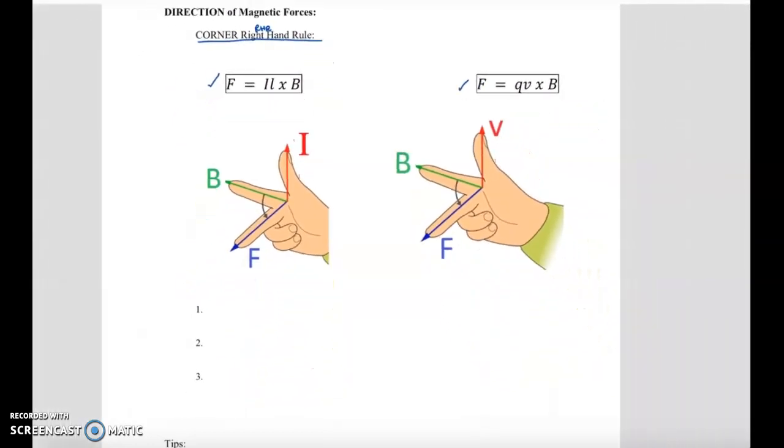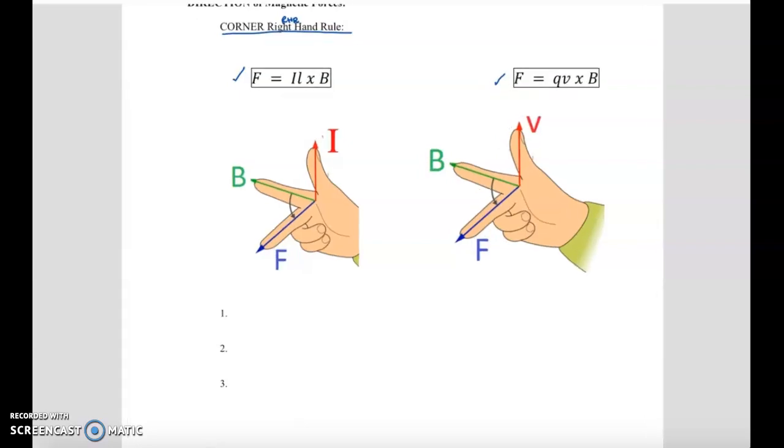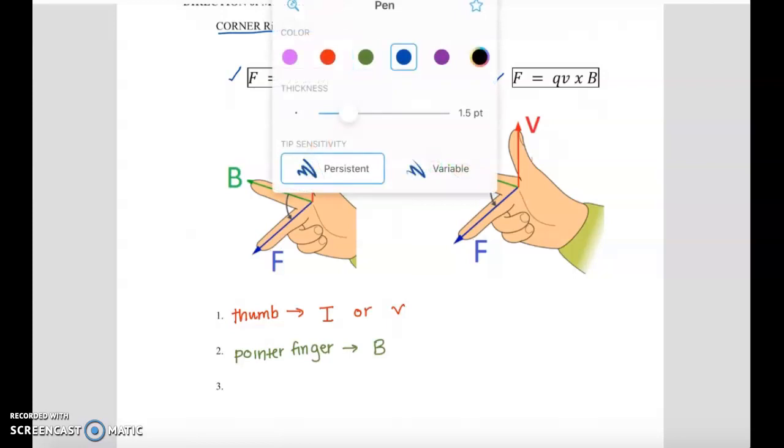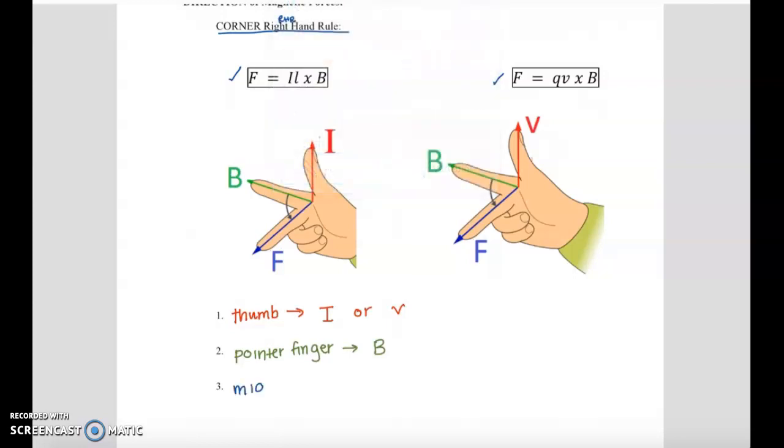Let me write this down. So the first thing that you're thinking about is that your thumb, I'll use colors here, your thumb is going to stand for I, current, or V, velocity, depending which scenario we're in. Your pointer finger is always going to stand for magnetic field B. And your middle finger is going to stand for F, force.